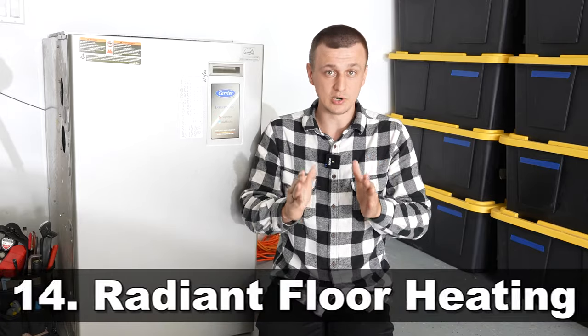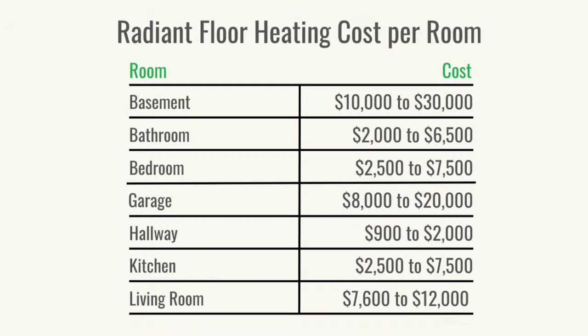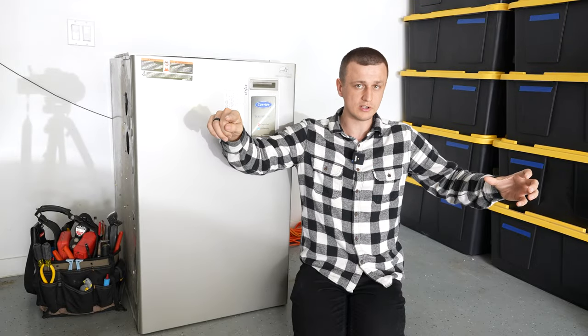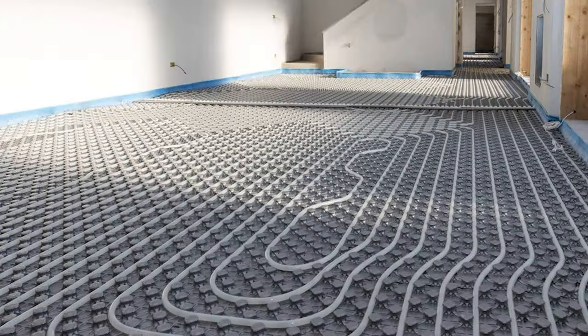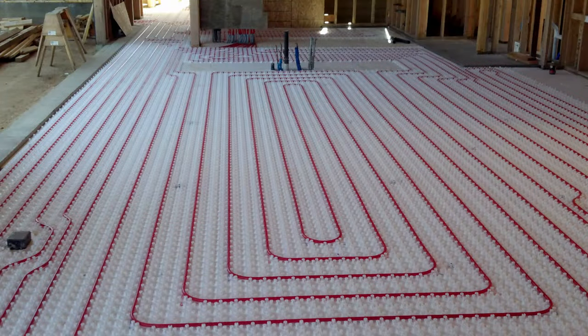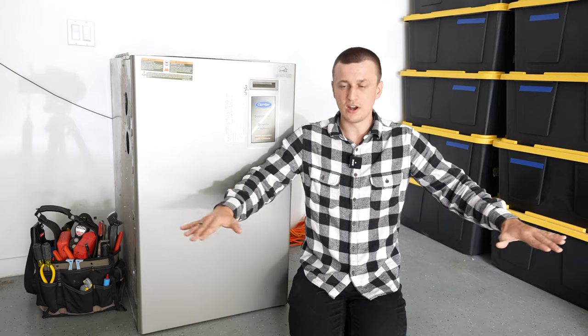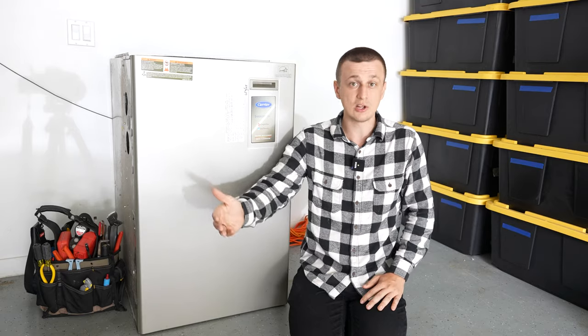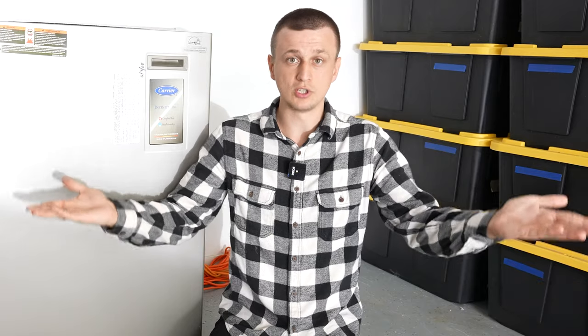Number 14 is in-floor heating. This is the most premium and most comfortable source of heating you can get. What they do is use a boiler, but instead of the water being pumped to radiators or baseboards, the water is pumped in loops underneath the floor throughout the whole house. With radiant floor heating, all the floors in your house are going to be nice and warm, regardless if it's tile or wood. Heat naturally rises.